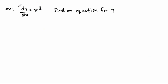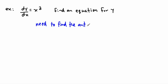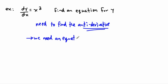So let's say we have an example like this. We're given dy/dx is x squared, and the idea is that we want to find an equation for y. If we have some equation for y, then if we take its derivative, we should get x squared. So we need to find what we call an anti-derivative — we need to find an equation whose derivative is x squared.